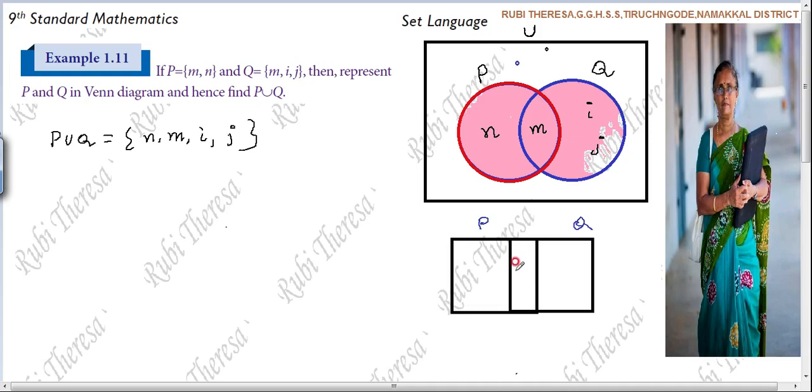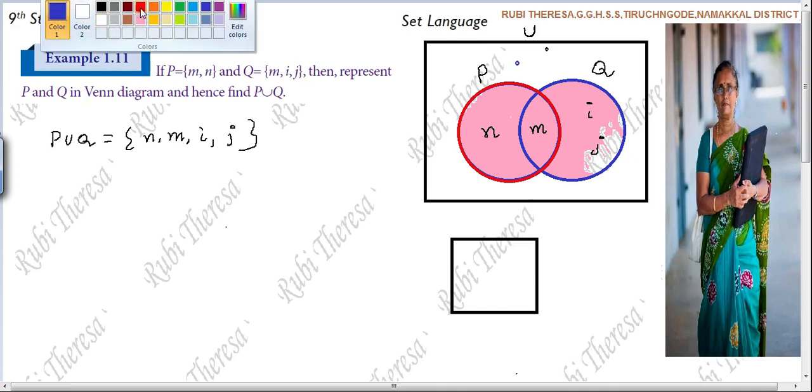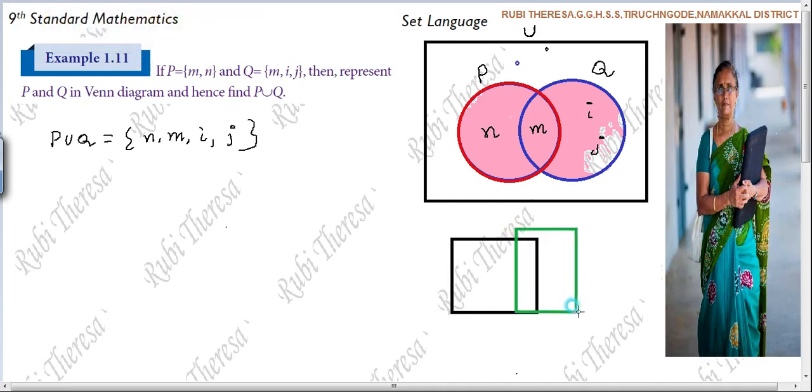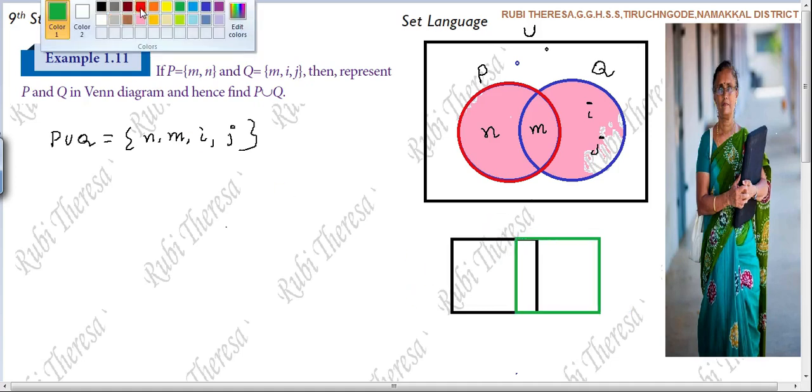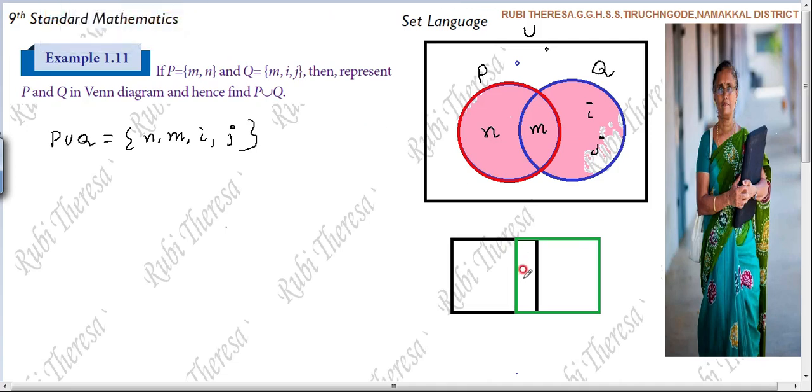Otherwise you can do it like this also. This is M. This is N. This is IJ. If you make it into different color then it will be clear. Do you follow? M. Here N. This is IJ. P set, Q set. Otherwise.